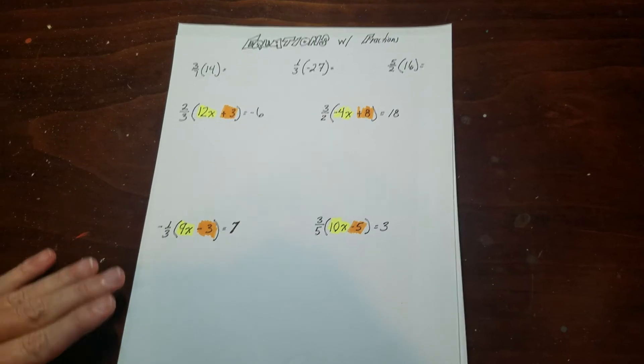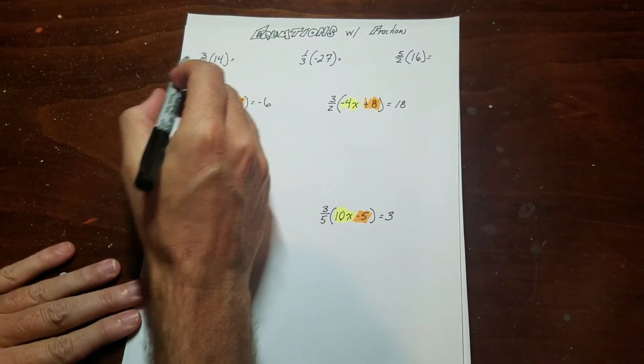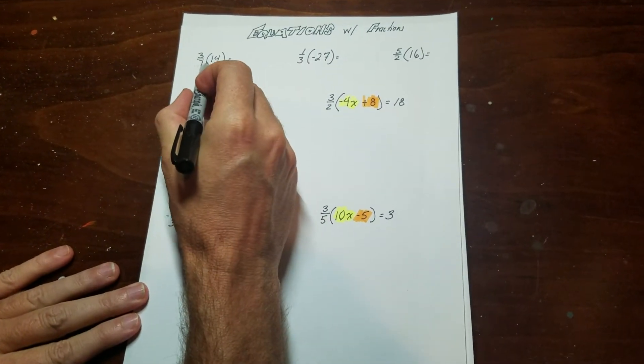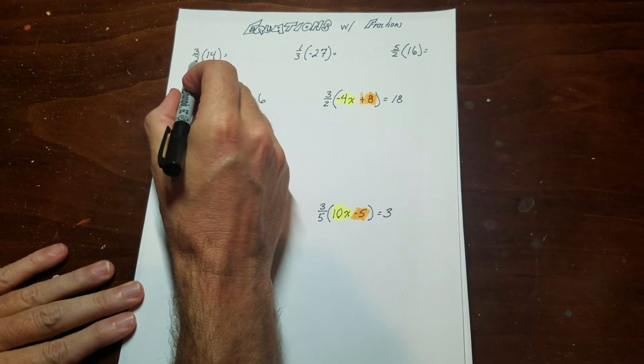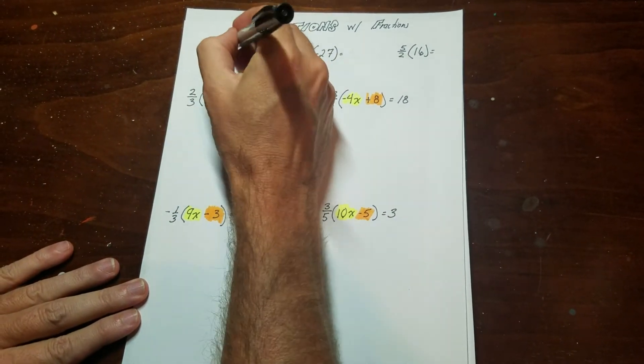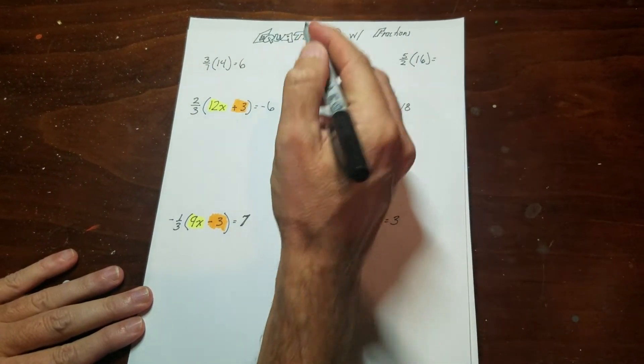First, a quick review of how this works. When you take a number like 14 and you multiply it by 3/7ths, what you do is 14 divided by 7, which is 2, and 2 times 3 is 6. So you can do these in your head.